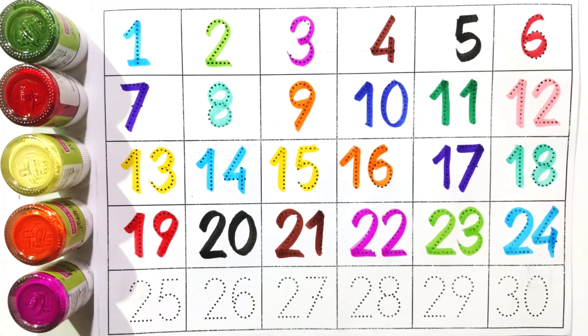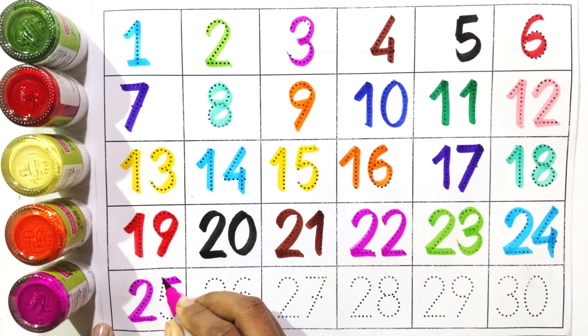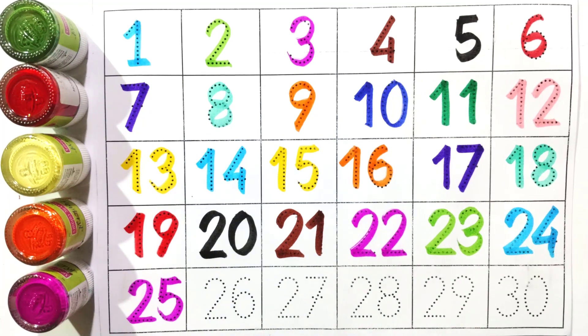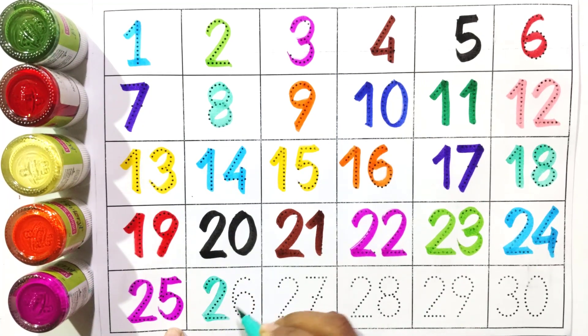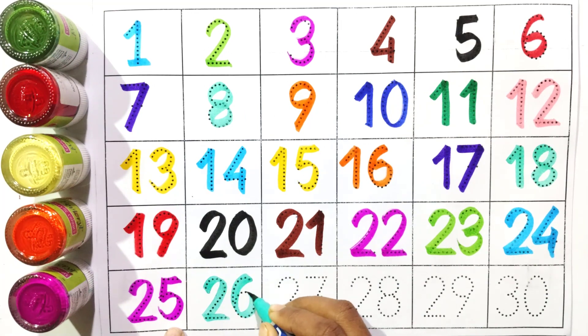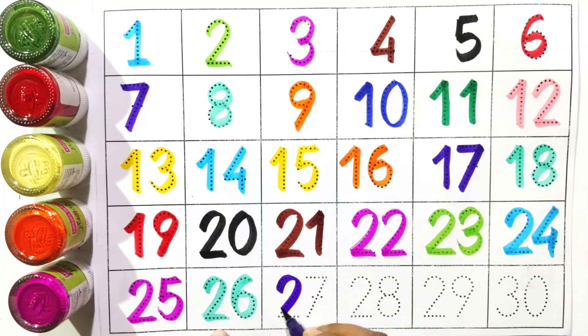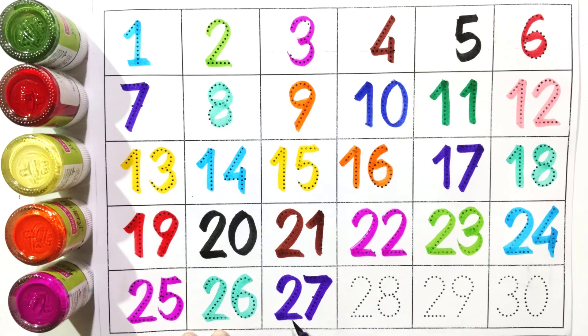Two and five: twenty-five. Two and six: twenty-six. Two and seven: twenty-seven.